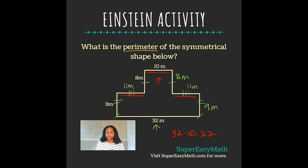Now, because we're calculating the perimeter, I know that we're going to add up the lengths of all the sides. So that means I have 9 plus 11 plus 8 plus 10 plus 8 plus 11 plus 9 plus 32, which totals 98 meters.